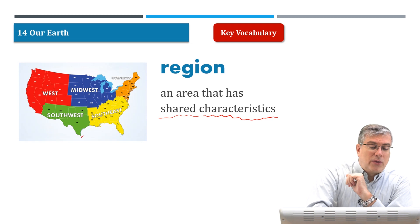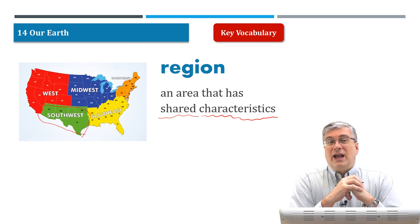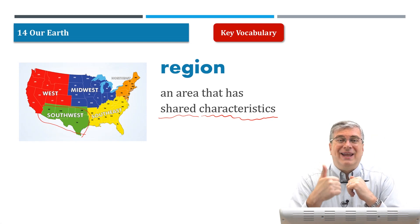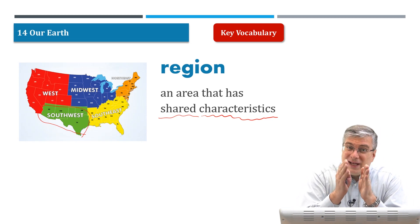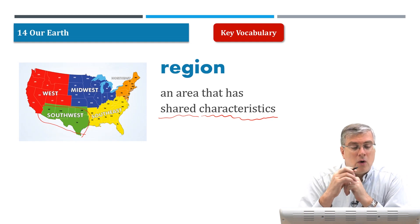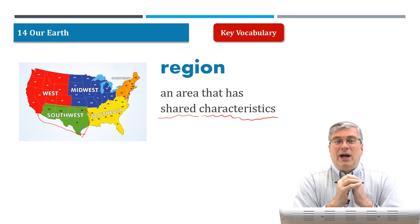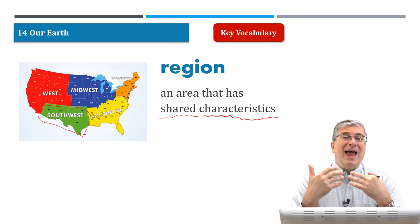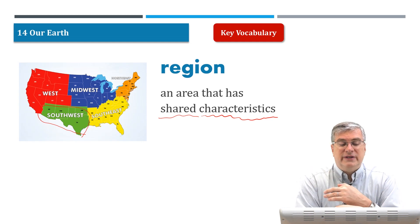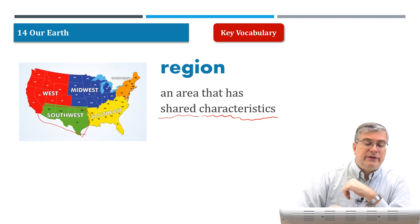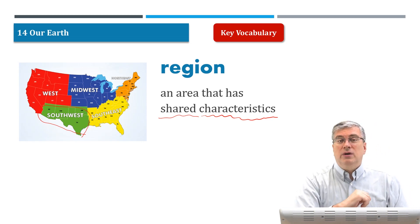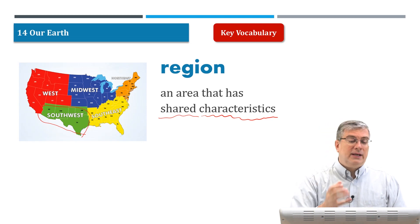If we look at this map, for example, the Southwest in America — what are some things shared in this region? It's characterized by deserts, it's dry, it's hot, it doesn't snow in winter. Those characteristics are shared by the entire region, which is divided into the states of Arizona, New Mexico, Texas, and Oklahoma. Those states comprise, or make up, one region. You can divide a country or the world by regions.